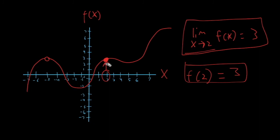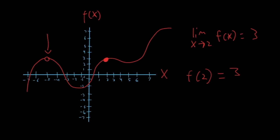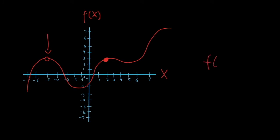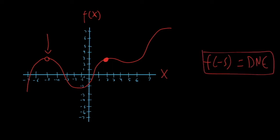Why do we even have limits if the result is going to be the same? Because there are actually many situations where you'll have a limit but you won't have a defined plugged-in value. An example of that is the hole in the graph at negative five. If I ask you to find the function value at negative five, there's a hole there, so we say it does not exist. But if I ask you to find the limit as x approaches negative five, surprisingly the value does exist — you just pretend the hole isn't there, follow the curve up, and read the f of x value, which is positive three.